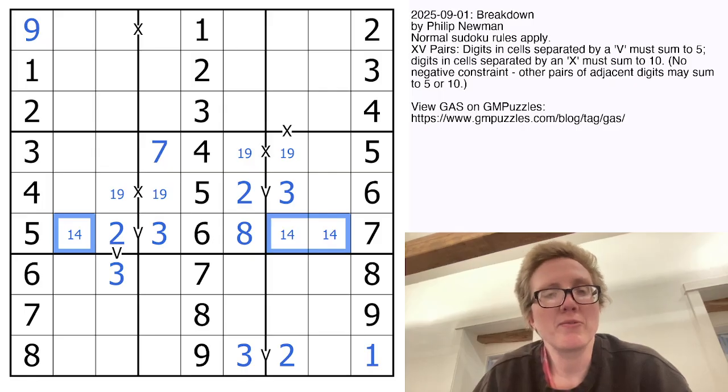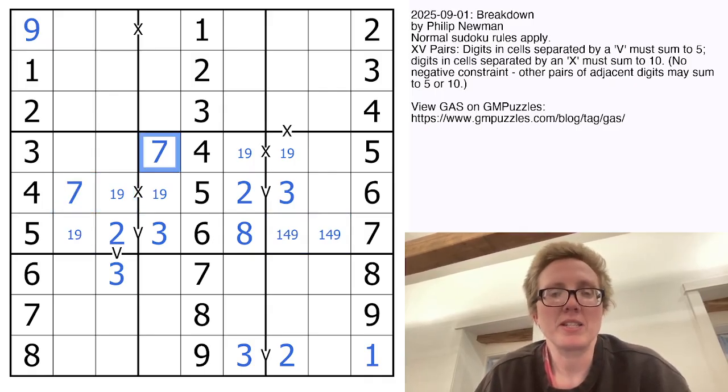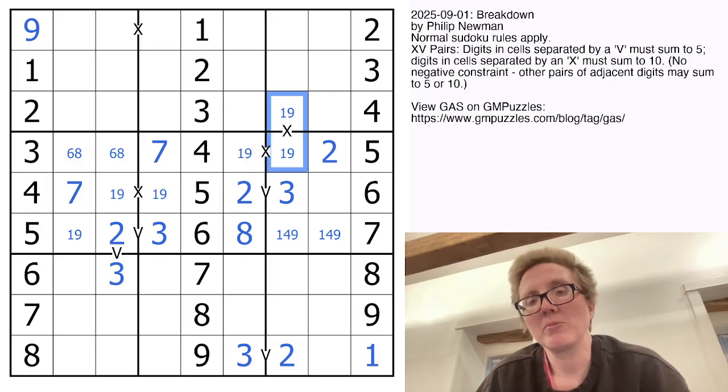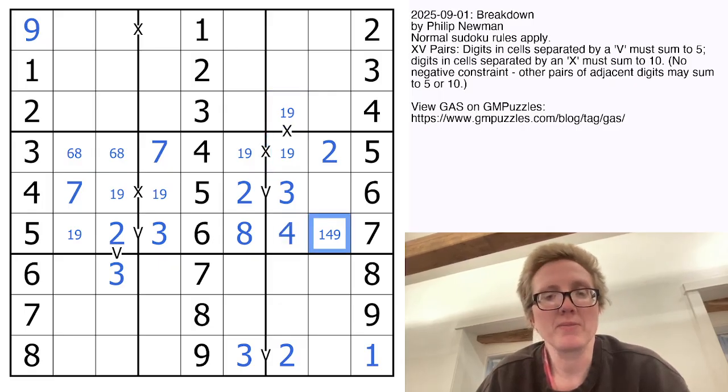So we need to place a 1, 4, and 9 to finish the row. That can't be a 4, so we now have a 1, 9 pair here. This is the only location for 7 in the region, because this 7 sees these cells, and we're going to have a 6 and an 8 here, and a 2 right here. Now 1 plus 9 is 10, and 9 plus 1 is 10, so this cell also has to be either a 1 or a 9. That makes this a 4. And this is going to be an 8 to finish off the region.